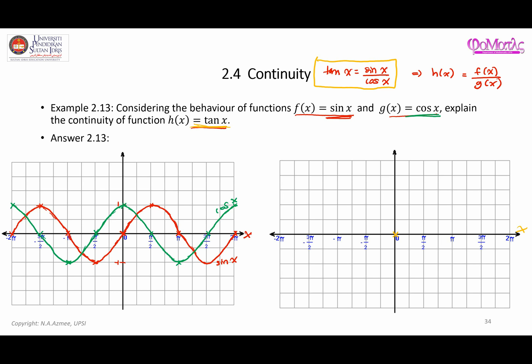For x = π/2, the behavior is sine over cosine = 1 over 0, which is undefined. So at this point there is no value of y — I'll represent this with a dotted vertical line at x = π/2. When x is π, sine is 0 and cosine is −1, so 0 over −1 equals 0; tangent x is 0 here.